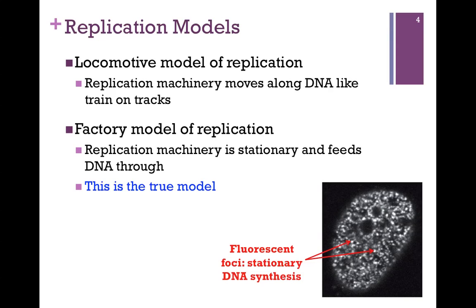The other possibility is the factory model. In that case, it's the machinery that's stationary, and it feeds the DNA through, melting it as it goes. This is the actual true model. In the locomotive model, the machinery is in motion and the DNA is stationary. In the actual factory model, it's the machinery that's stationary and the DNA is moved through.